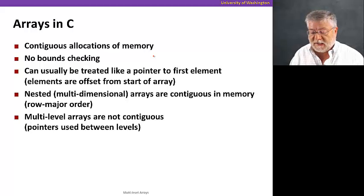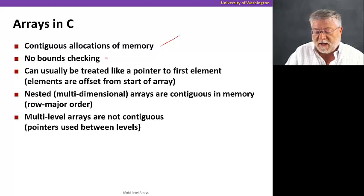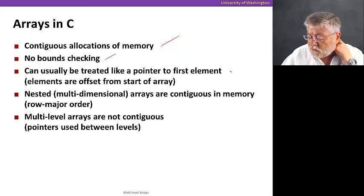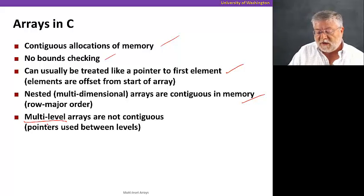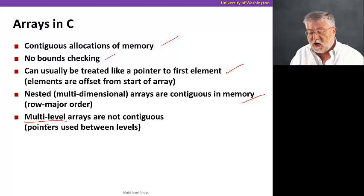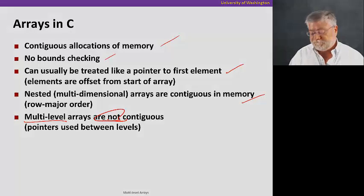To do a little bit of a summarization of arrays in C, then: arrays themselves are contiguous allocation in memory. There is no bounds checking. We can usually treat the array name like a pointer to the first element, and then elements are offset from that start of the array. Multidimensional arrays are contiguous in memory and in row major order. Multi-level arrays, these ones we've just been discussing, are not contiguous. And pointers are used between levels. So we have many less guarantees about how things are arranged.